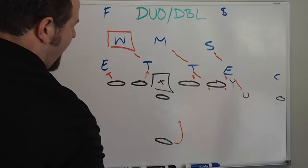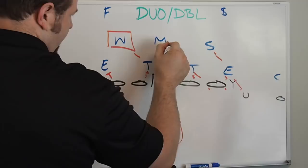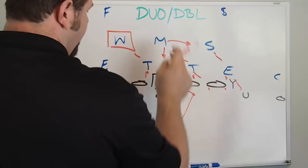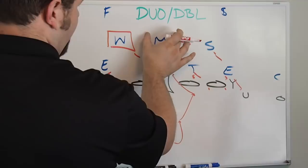On duo he looks at the Mike linebacker. The Mike linebacker rule will dictate where this guy goes. If the Mike linebacker at all plays downhill this way, the back will bounce it right here. The Mike plays over the top this way, the back will come back here. The Mike is the read for the running back on duo.